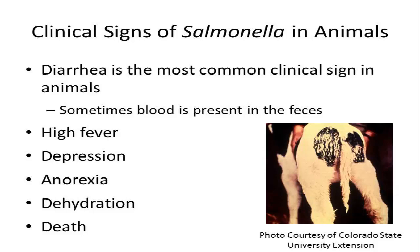All species seem to be susceptible to Salmonellosis under the right conditions, but clinical disease is more common in some animals than others. For instance, clinical cases are more common in cattle, pigs, and horses, but are relatively uncommon in cats and dogs.